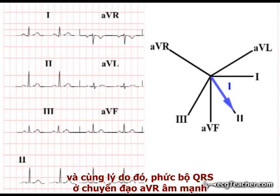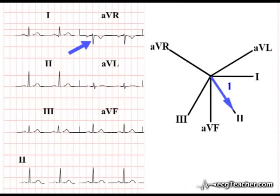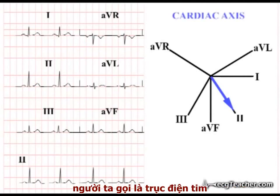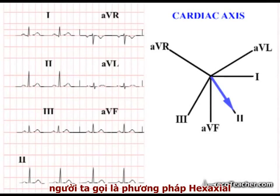Consistent with this, the QRS complex in lead AVR is strongly negative, with a deep S-wave and little R-wave activity. The direction of the total frontal QRS vector is called the cardiac axis, and we've just estimated its position based on the morphology of the QRS complexes in the frontal leads — the so-called hexaxial method.